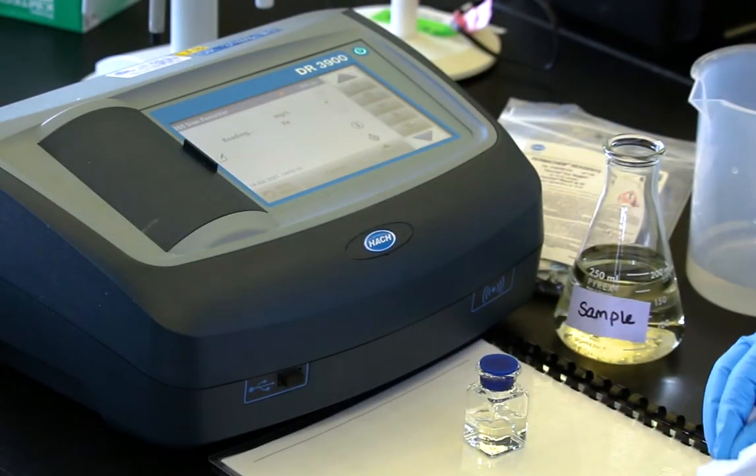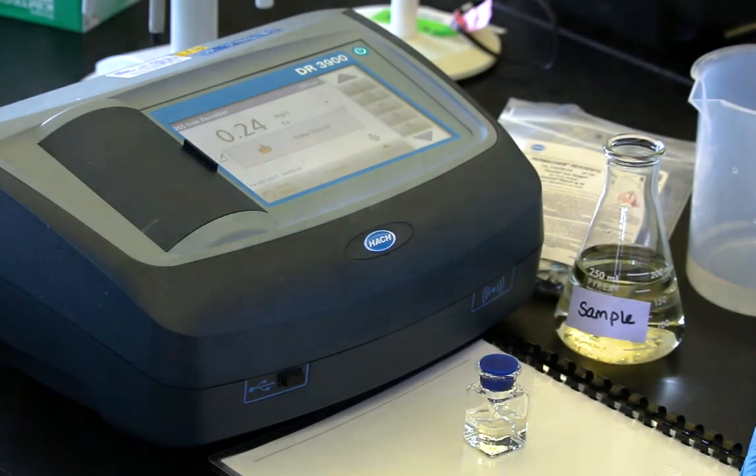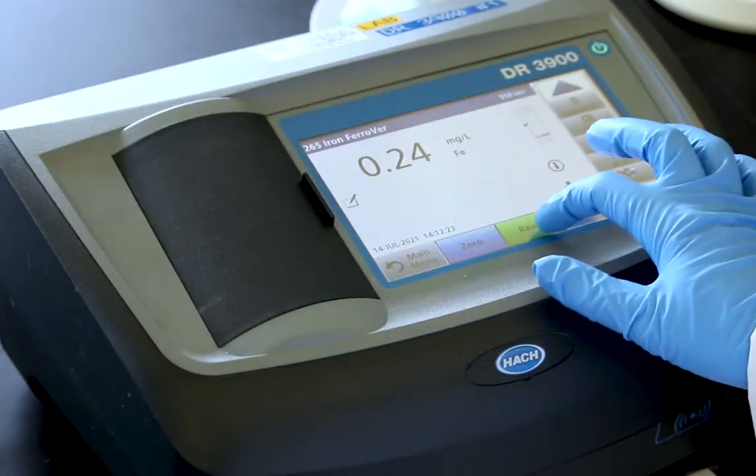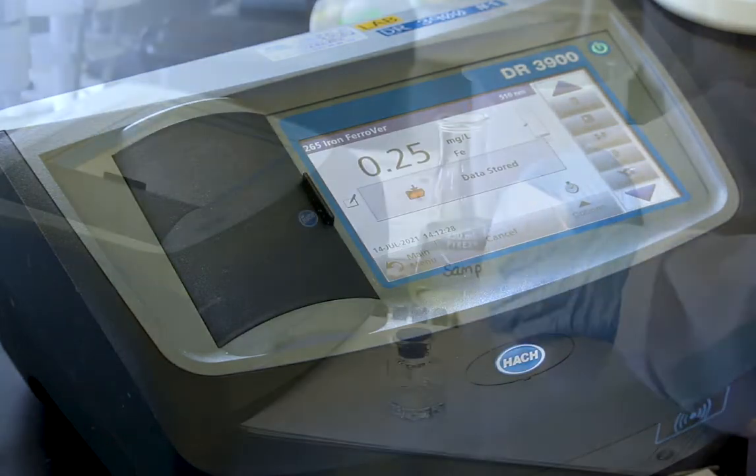Clean the outside of the sample cell containing the reagent and when the timer expires, insert the cell and press read. Record the sample result in milligrams per litre of iron.